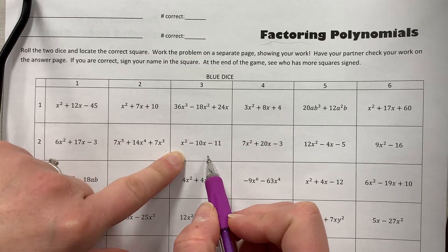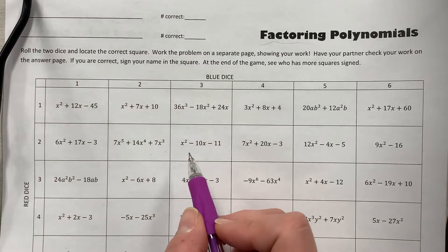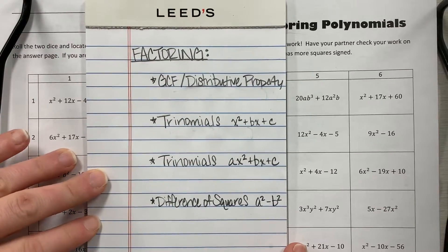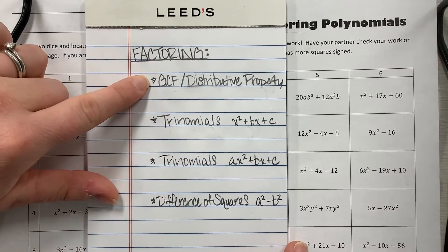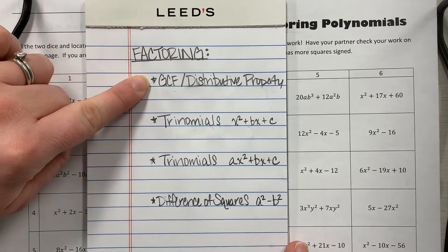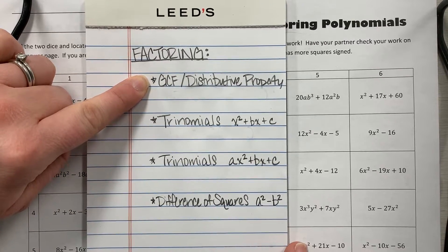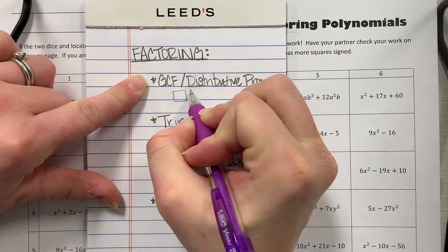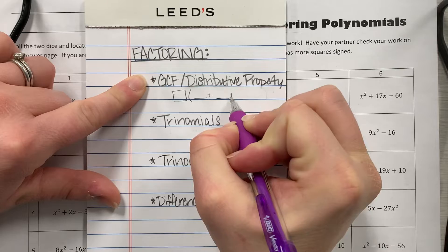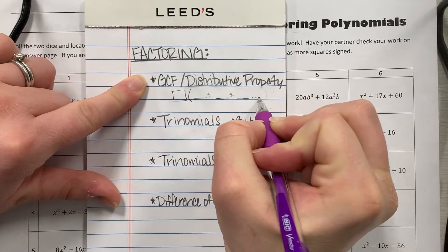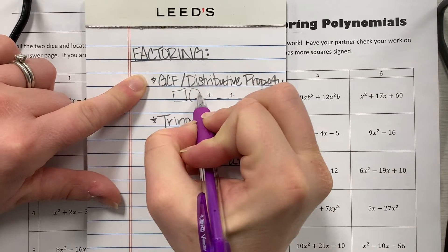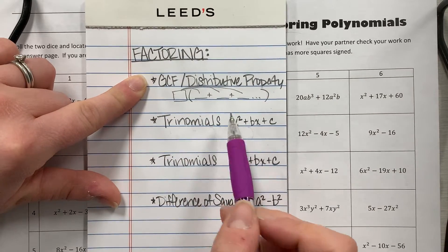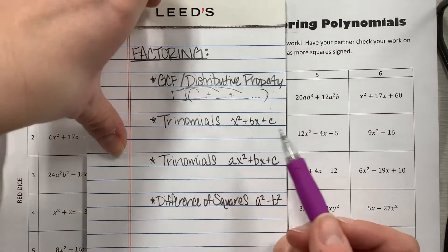You're factoring it, breaking it down into a multiplication problem. You basically have these processes to use. The first thing I want you to always check for is: is there a greatest common factor? Is there a way that I can rewrite this problem into a distributive property question? It could be three things that are being distributed, but your key on this is if you look across a problem and you see...